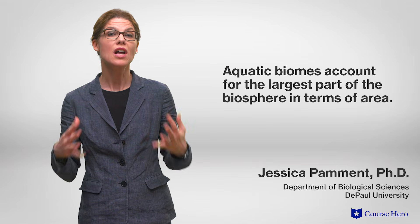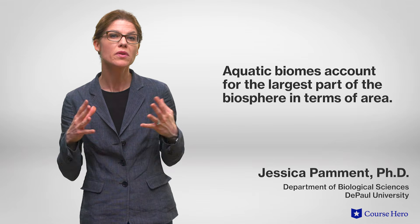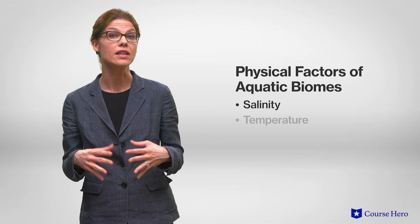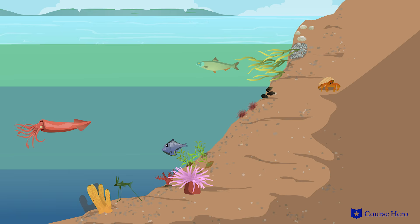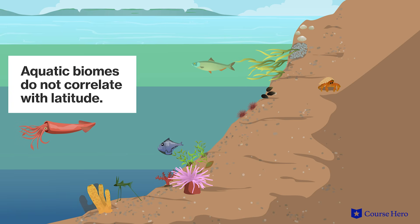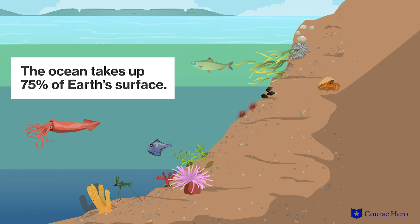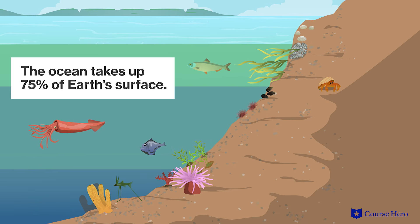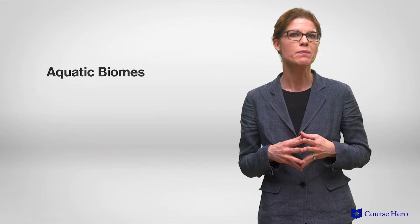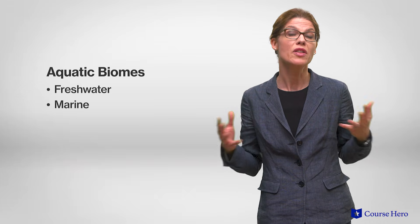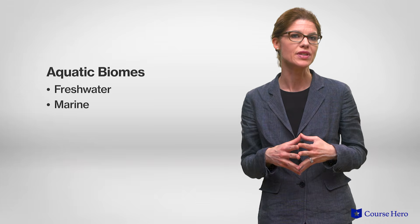Aquatic biomes account for the largest part of the biosphere in terms of area and they're characterized by physical factors such as salinity, temperature, and availability of light. Unlike terrestrial biomes, aquatic biomes do not correlate with latitude, largely because a single aquatic biome, the ocean, takes up 75% of the Earth's surface. Ecologists differentiate between two types of aquatic biomes, freshwater and marine biomes, on the basis of physical and chemical differences.